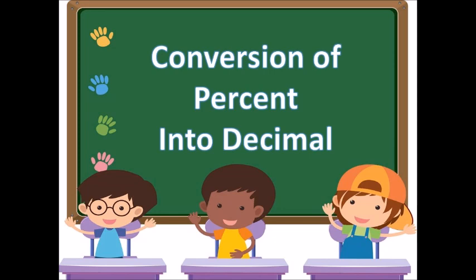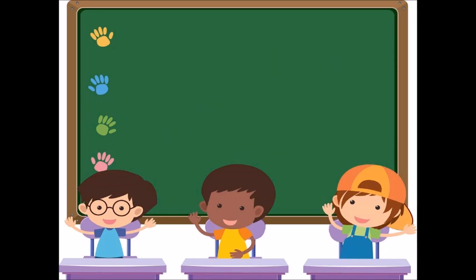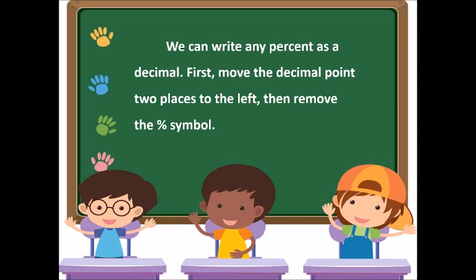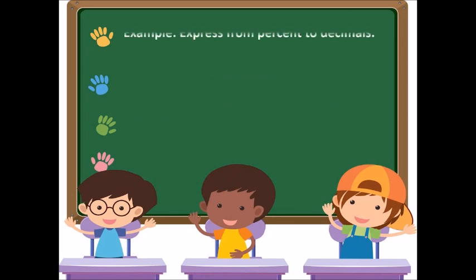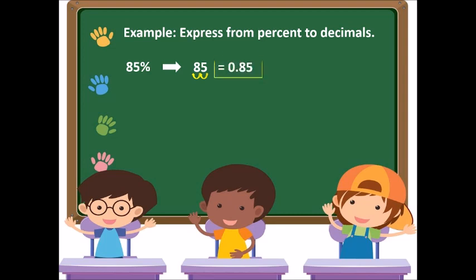Next is conversion of percent into decimal. We can write any percent as a decimal. First, move the decimal point two places to the left, then remove the percent symbol. For example, to express 85% as a decimal, we move the decimal point two places to the left, giving us 0.85. So 85% equals 0.85.